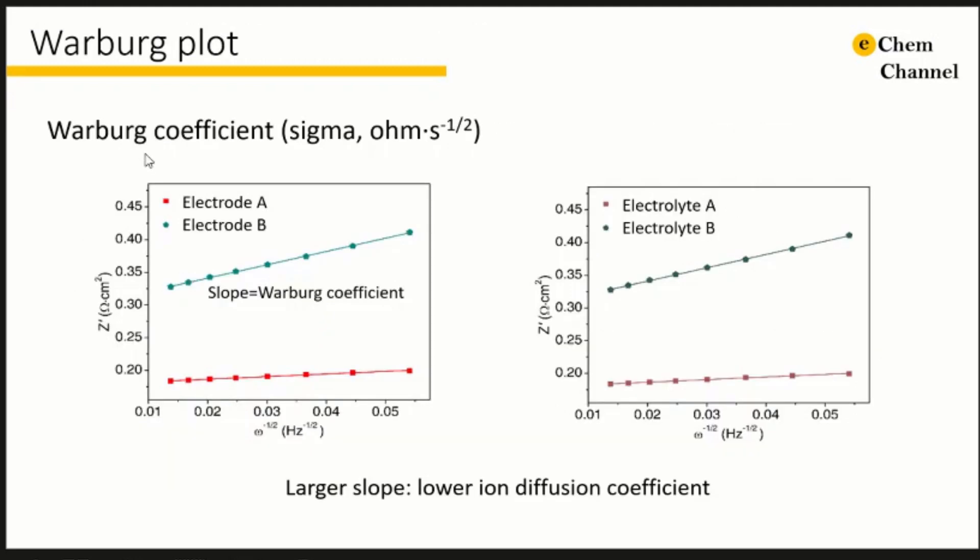The Warburg coefficient, sigma, can be determined from the slope of a Warburg plot, or by fitting to an equivalent circuit model which includes a Warburg impedance. The unit of the Warburg coefficient is ohm second to the power of negative 0.5. By linear fitting the curve, the slope is the Warburg coefficient.